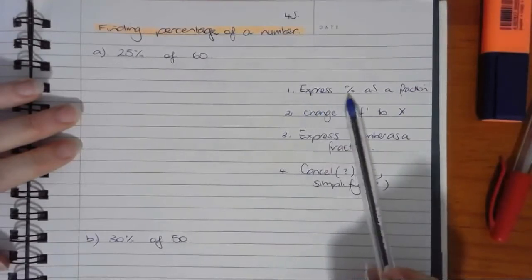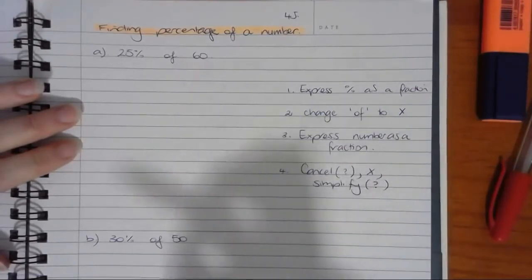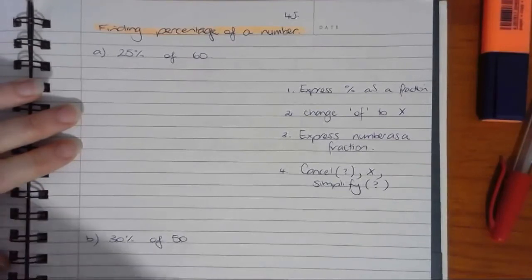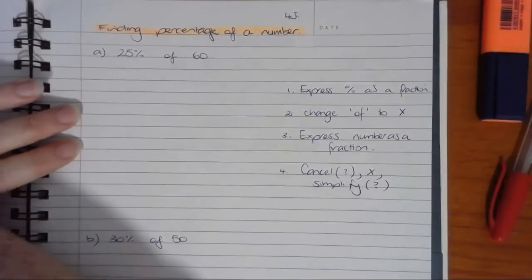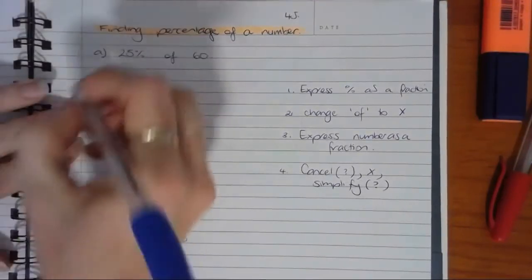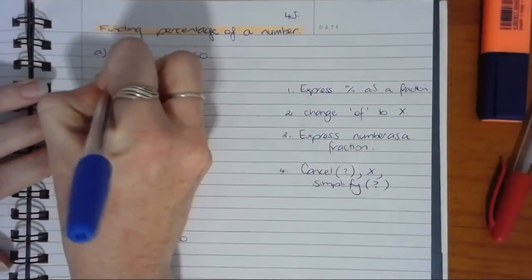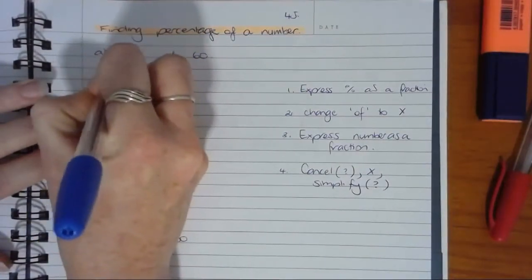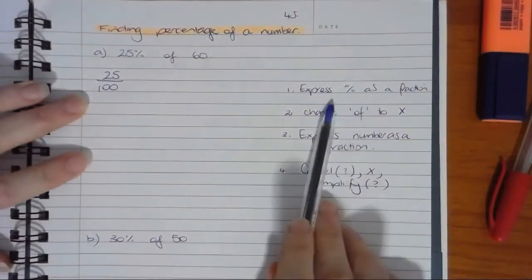The first one is express the percentage as a fraction. When we're expressing a percentage as a fraction, we're talking about putting a number over 100. So I'm going to do that with my percentage, and in this question it's 25 over 100.